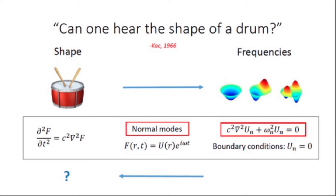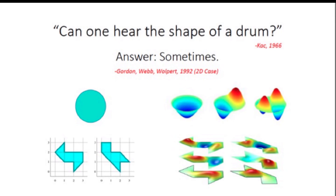Does anybody in the room happen to know the answer to this question? The answer turns out to be: sometimes. Some quarter century later, in the 1990s, Carolyn Gordon and collaborators found that in highly symmetric systems — like a circular drum head — if you give me the frequencies, yes, I can tell you it's a circle. But they did come up with a counterexample of two extremely funky-looking drums that have the same area and the same perimeter but produce different normal modes. So sometimes you can and sometimes you can't.